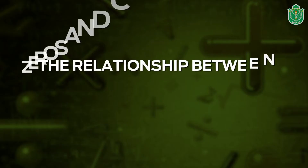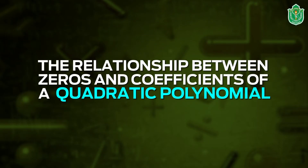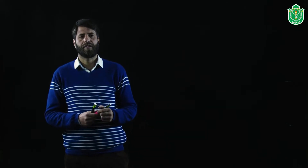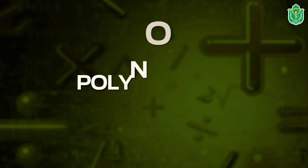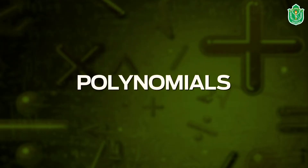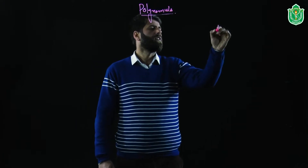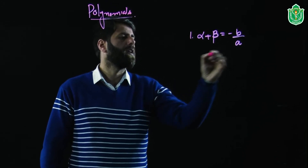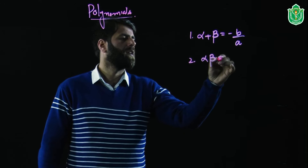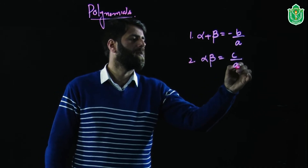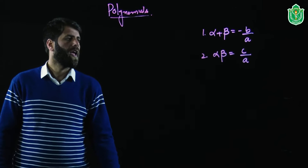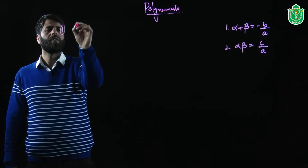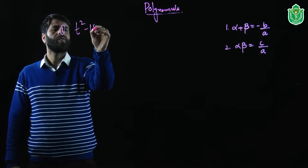Hello dear students. In the previous lecture we defined the relationship between zeros and coefficients of a quadratic polynomial. We also defined some questions based on this exercise. The first condition was alpha plus beta is equal to minus b divided by a, and the second condition was alpha into beta is equal to c divided by a.